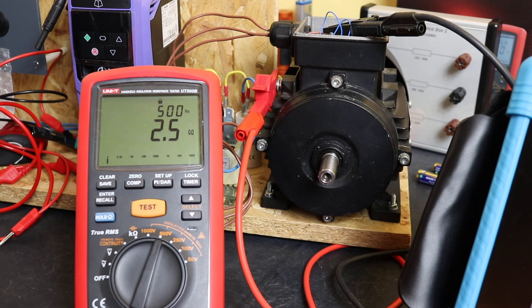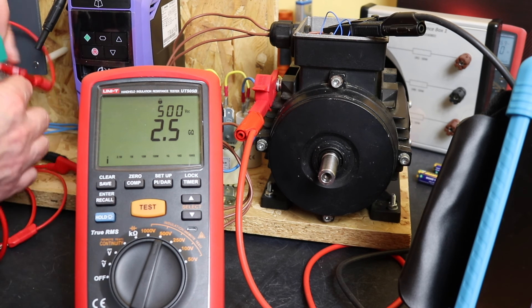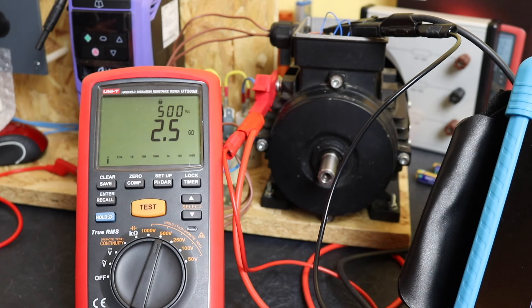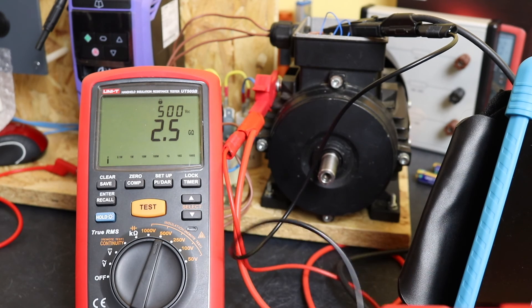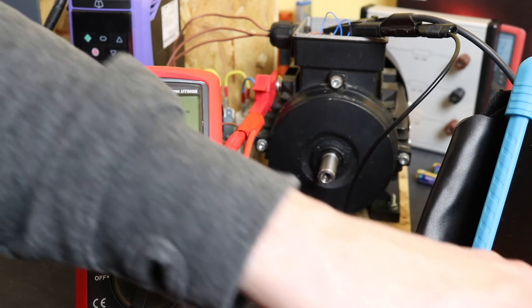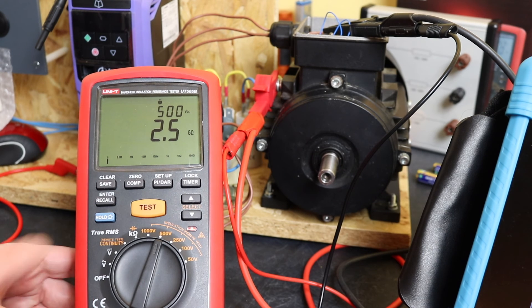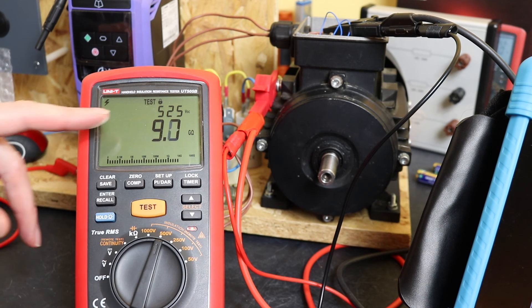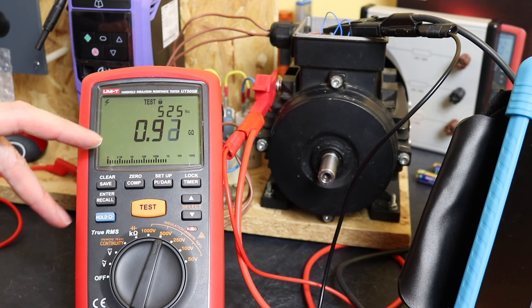I do have here a little capacitor. This is a 0.1 microfarad capacitor that I can put in parallel. So we're now just running across the output of the UT505B with this little 0.1 microfarad capacitor. What we'll see now when I turn this on...